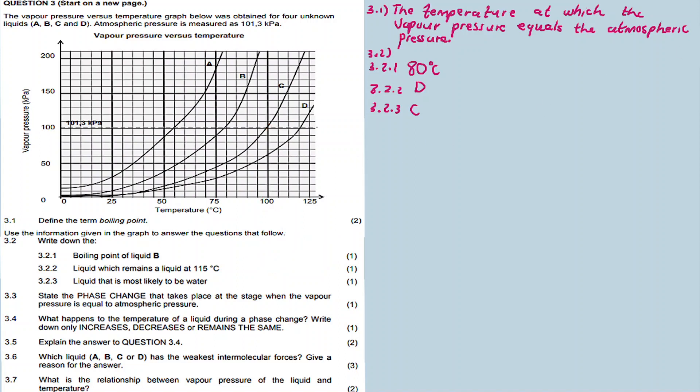Question 3.3: State the phase change that takes place at the stage when the vapor pressure is equal to atmospheric pressure. The phase change is liquid changes to gas.